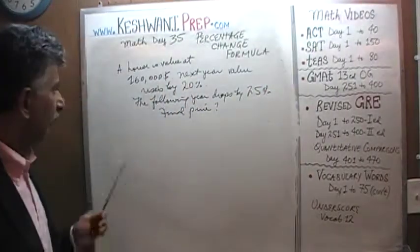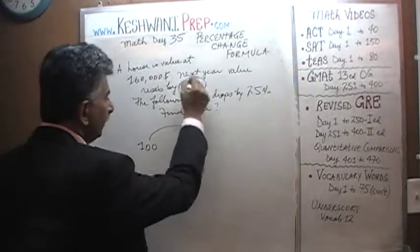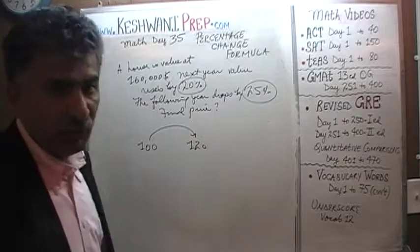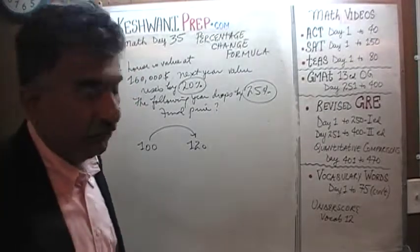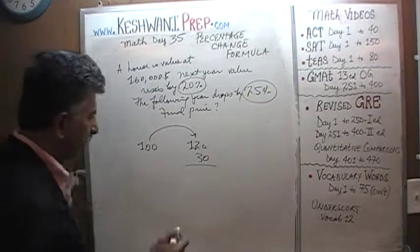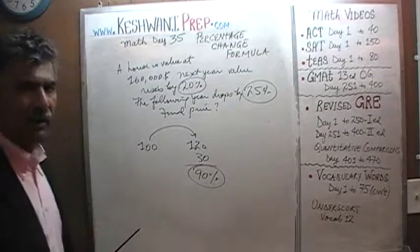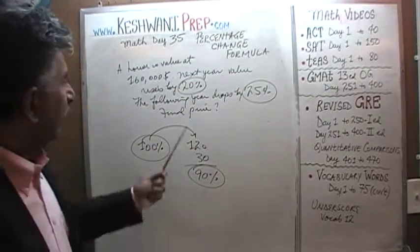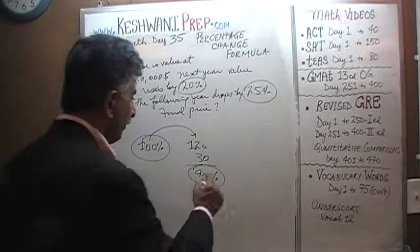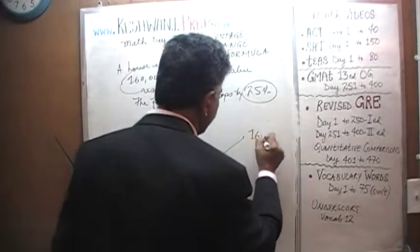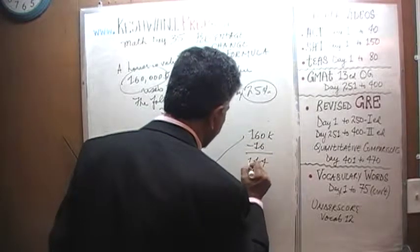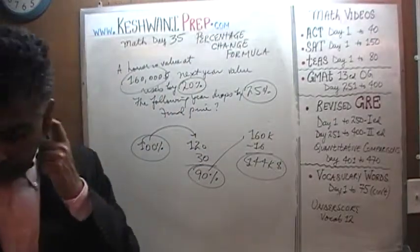You can see how quick and simple it is. So we start out with 100. We have an increase of 20%. So it goes up to 120. And then we have a drop of 25%. A drop of 25% in this case is very simple. 25% means a quarter. Half of 120 is 60 and half of 60 is 30. So it drops by 30. One quarter of 120 is 30. We're left with 90% of the original price. The final price of the house is 90% of 160K. 160K minus 10%. So we just subtract 16 from it. We end up with 144,000. The final price of the house is going to be 144,000. Straightforward deal.